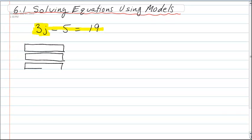All right, and then we have minus 5, so we have negative algebra tiles and I'm just going to draw them in red, so we have, there's 5, so that's 3j minus 5.